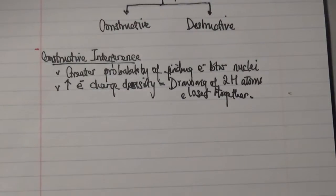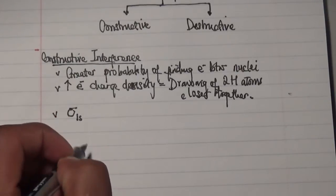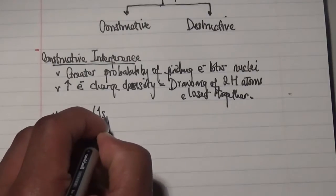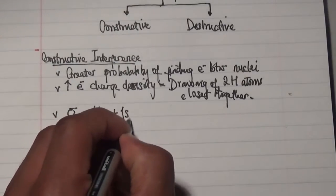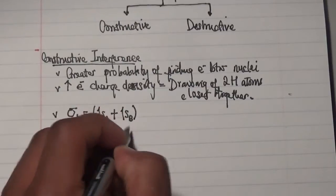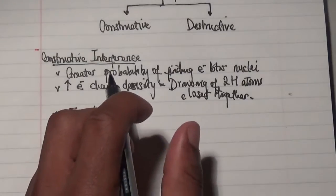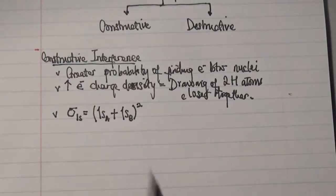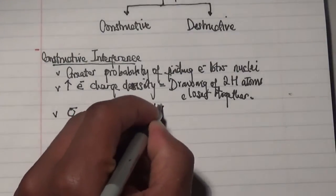This is shown mathematically as follows. The formation of constructive interference will be represented by the symbol sigma 1s, and this is equal to a mathematical function which involves the 1s of one hydrogen atom interacting positively with the 1s of the other hydrogen atom, represented as B. Remember that transforming wave functions into probability density involves squaring the wave function. So we are going to square this whole wave function in order to get the probability density.